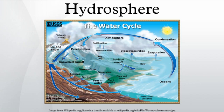The total mass of the Earth's hydrosphere is about 1.4 × 10⁻¹⁸ tons, which is about 0.023% of the Earth's total mass. About 20 × 10⁻¹² tons of this is in the Earth's atmosphere. Approximately 75% of the Earth's surface, an area of some 361 million square kilometers, is covered by ocean. The average salinity of the Earth's oceans is about 35 grams of salt per kilogram of seawater.